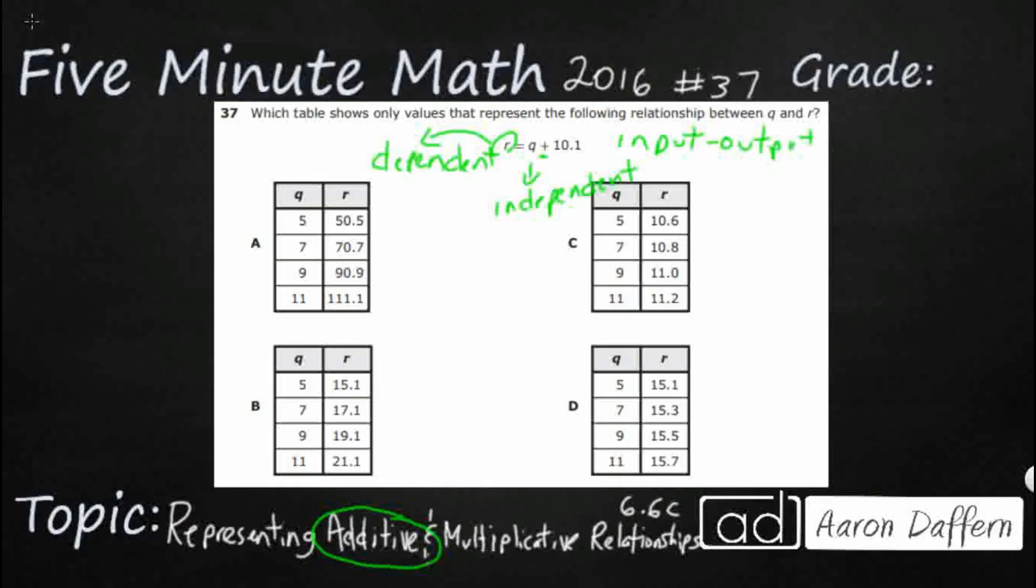But which of these tables actually matches this? We are going to start over here with A, and we are just going to write r equals q plus 10.1. And what we are going to do is we are just going to plug in these numbers. So make sure, even though it says r first in our table, it says q first. So make sure we pull the correct one. So r, this first one, is going to be 50.5 equals q is 5 plus 10.1.